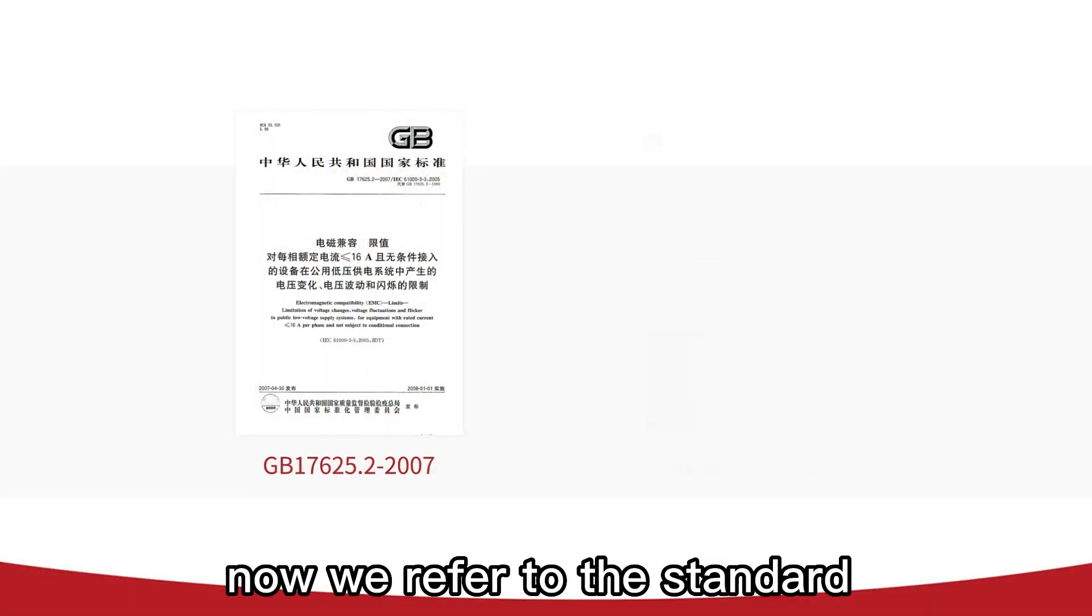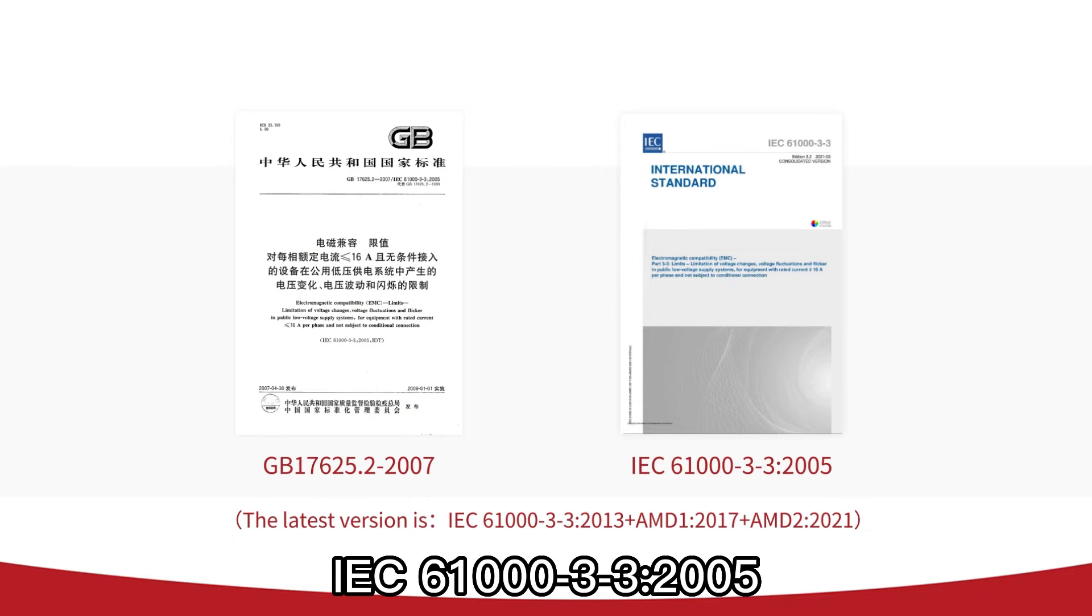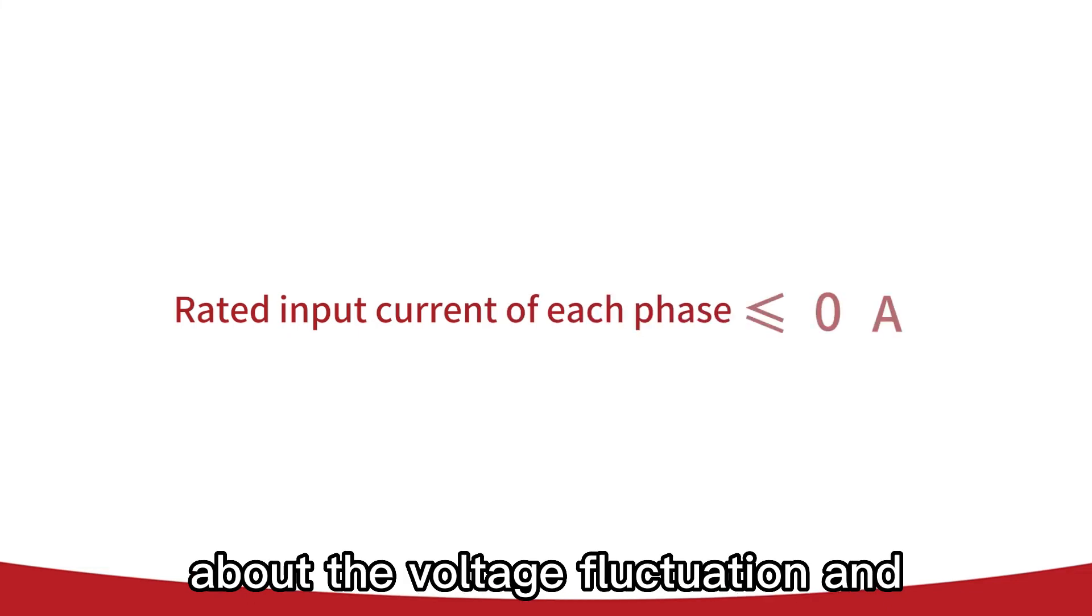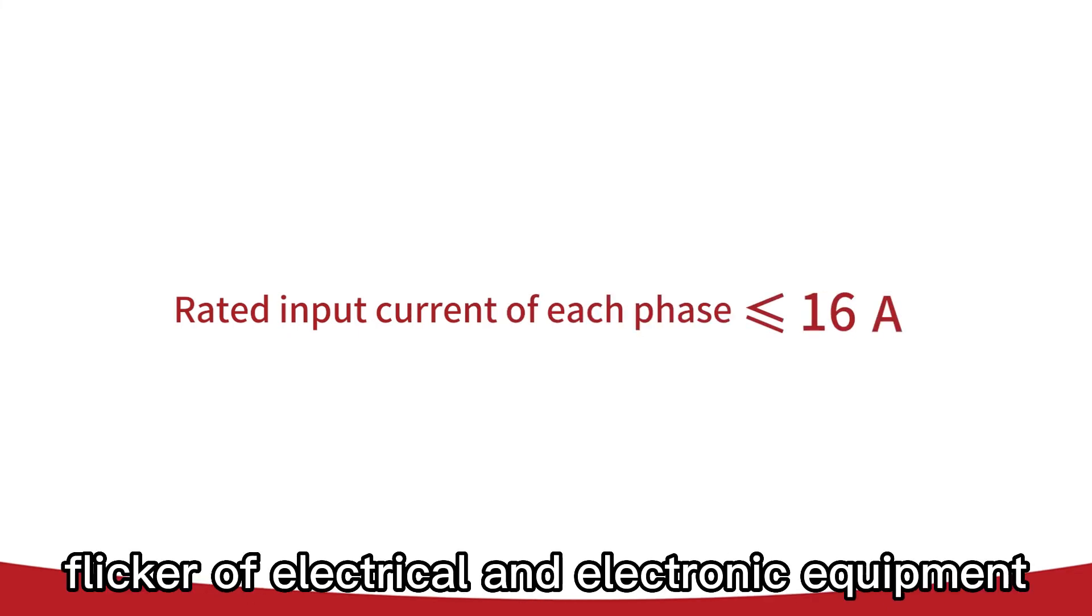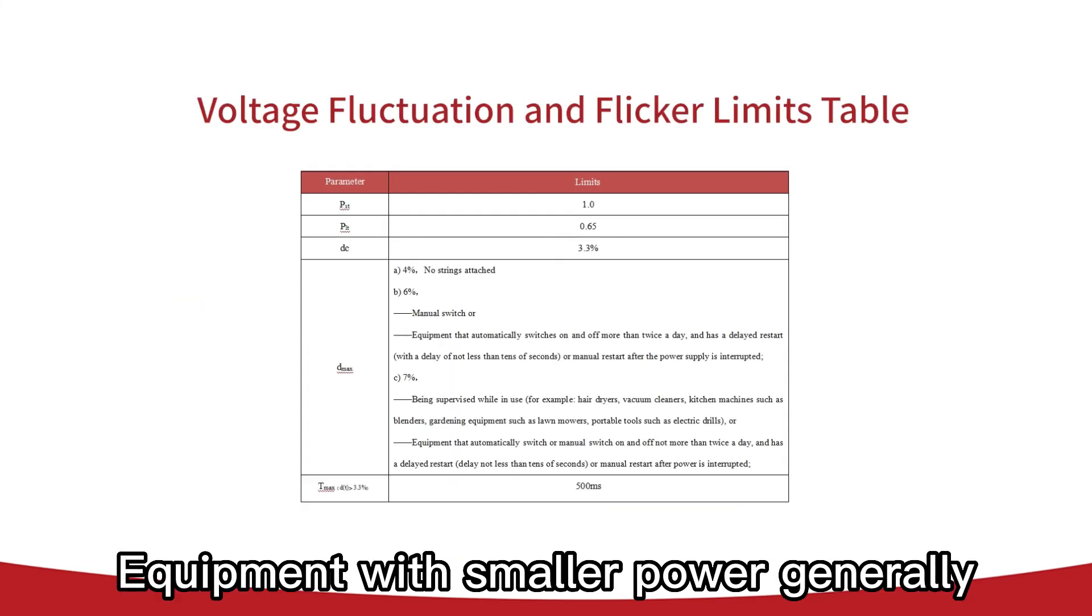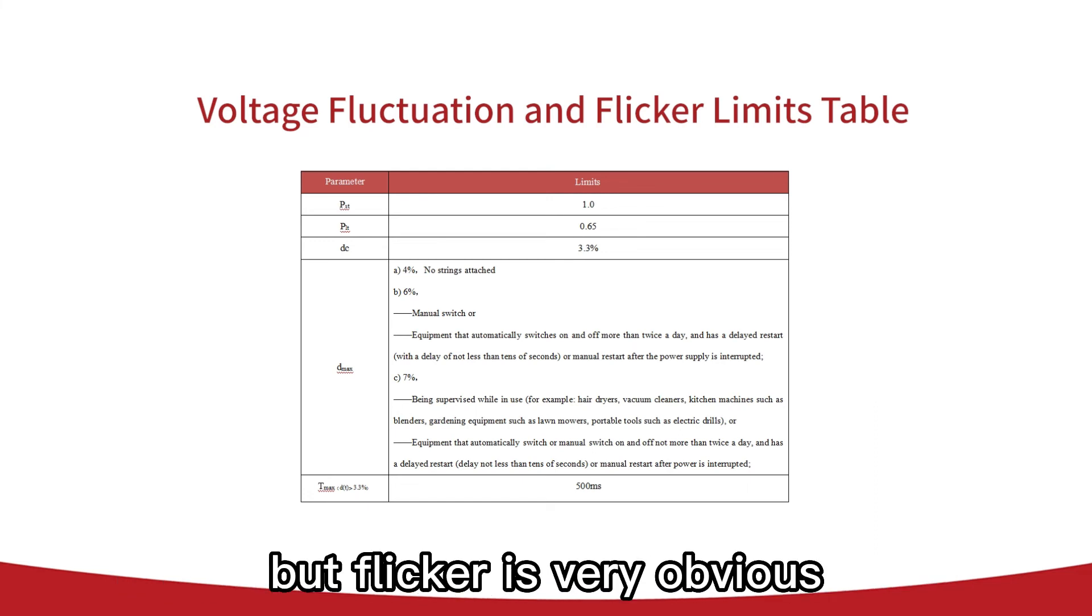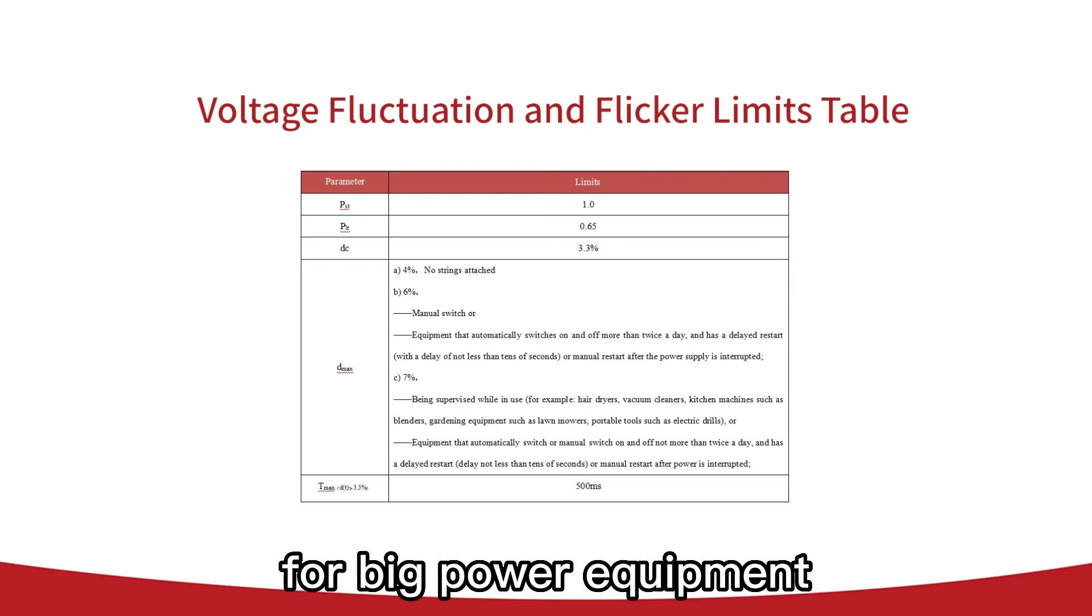In China, we refer to the standard IEC 61000-3-3-2005. The standard sets the limitation about the voltage fluctuation and flicker of electrical and electronic equipment with rated input current of each phase less than or equal to 16A. Equipment with smaller power generally does not cause the flicker to exceed the limitation, but flicker is very obvious for big power equipment.